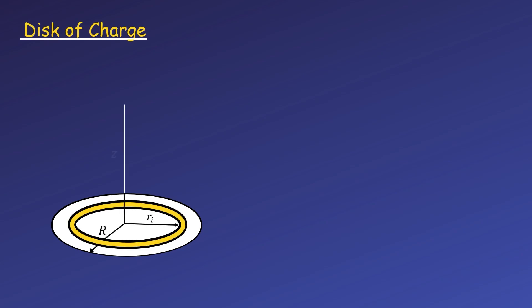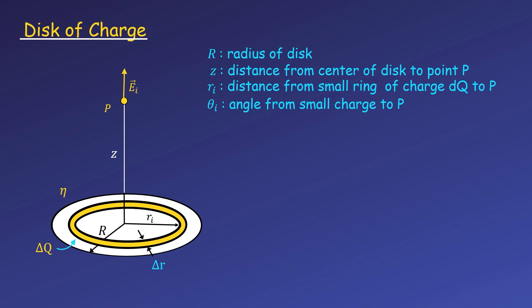In this video, we're finding the electric field of a disk of charge. I'll draw a disk of radius R and surface charge density eta lying in the xy plane. We'll look at the field at a point P above the disk on the z-axis.